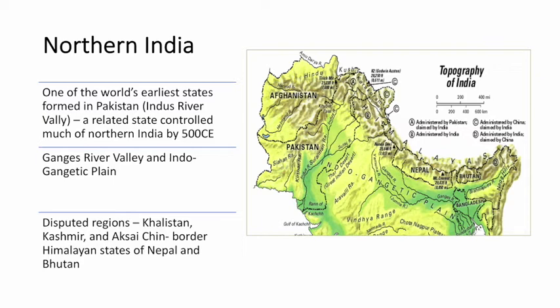With the in-migration of people from Central Asia, they moved into northern India at the same time that early state began to decline and collapse. By 500 CE, a new state emerged on the Indo-Gangetic plain, and it's from that period we begin to have a concept of something we could call India — a country, state, and society. In the north today, you still see many disputed regions: Khalistan, the border region between Pakistan and India; Kashmir in the very north near the Hindu Kush and Karakoram mountains, disputed between Pakistan and India; and Aksai Chin, controlled by China but claimed by India.